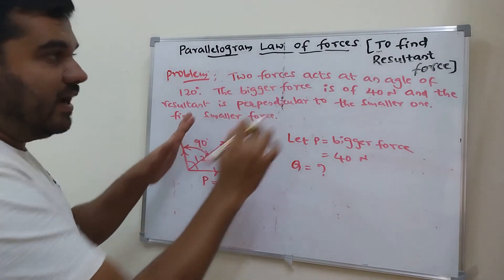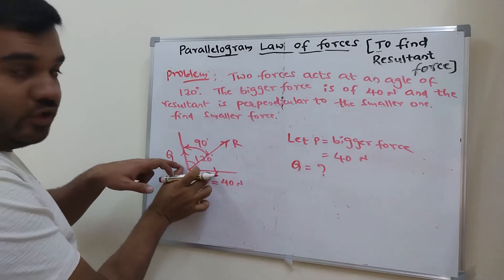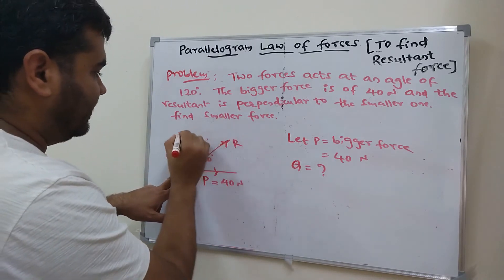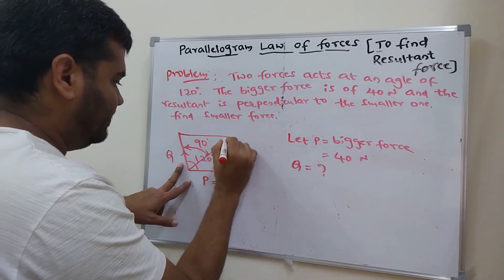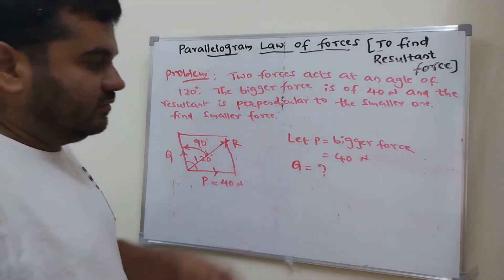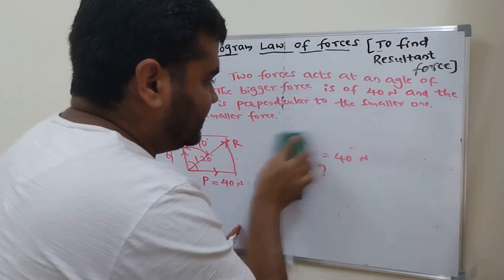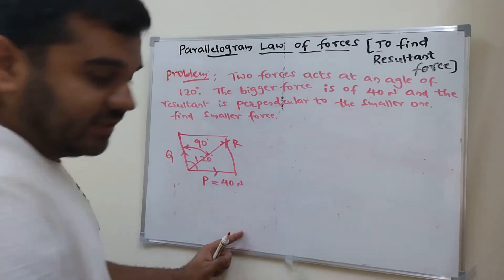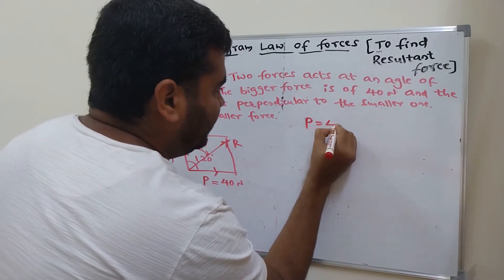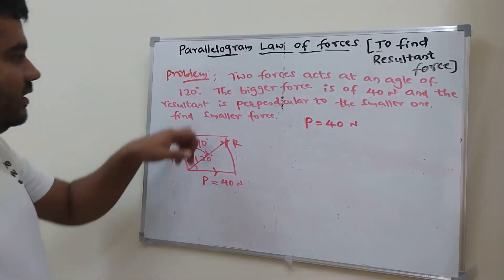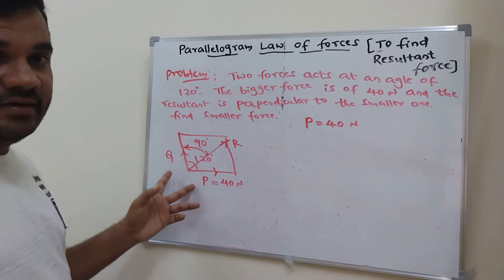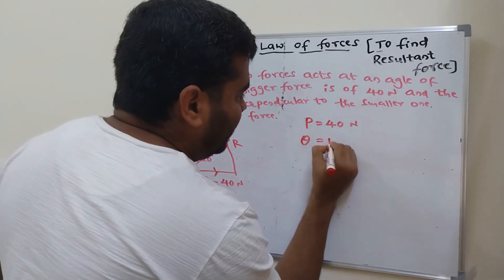This is the parallelogram law of forces — two sides of a parallelogram represent the two forces, and the other two sides complete the parallelogram. Now the given data: P equal to 40 Newton, and the angle between the two forces P and Q is theta equal to 120 degrees.